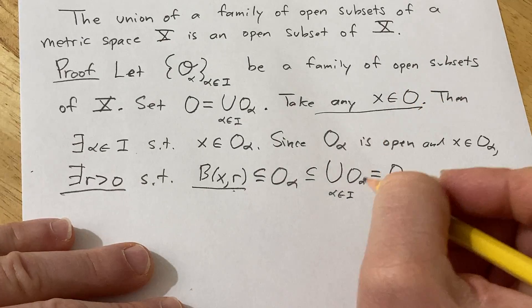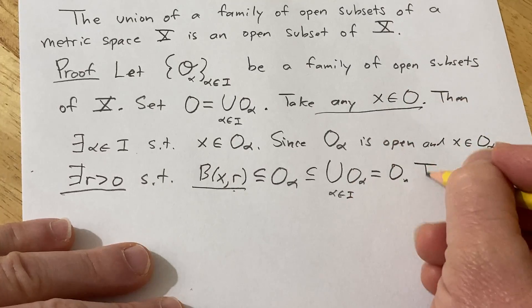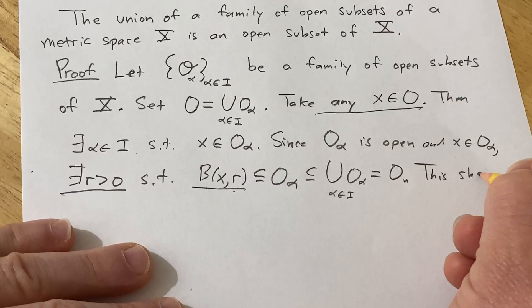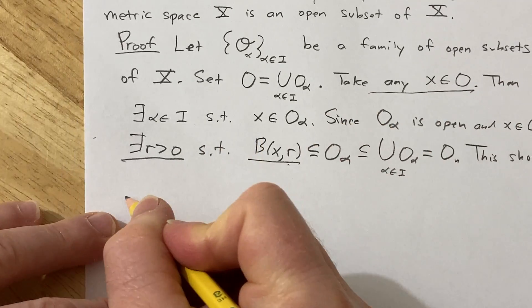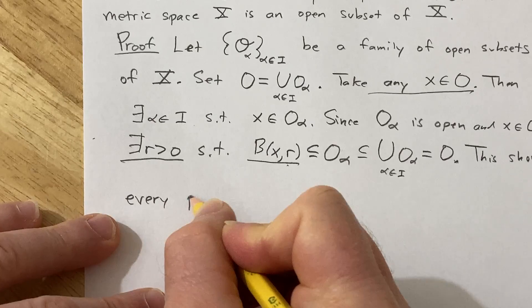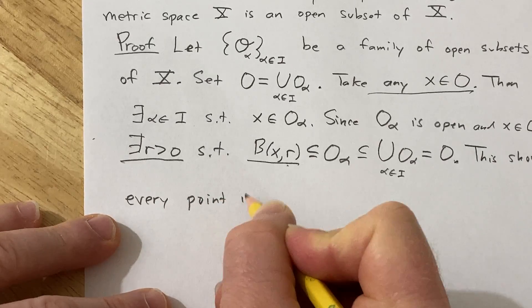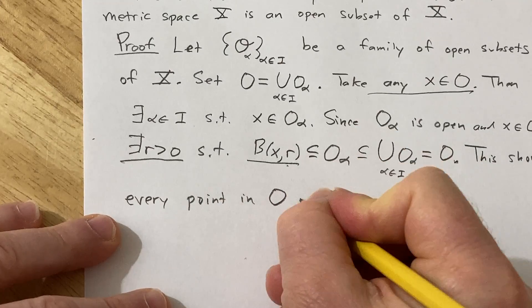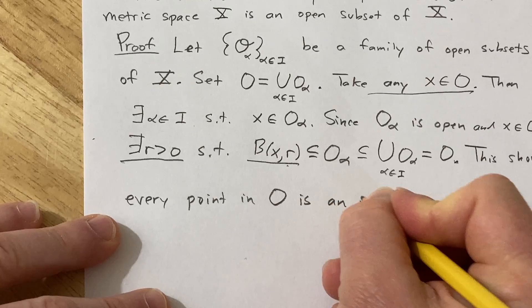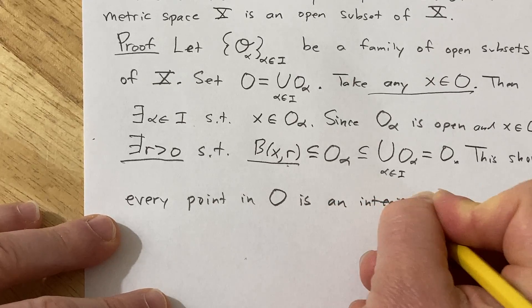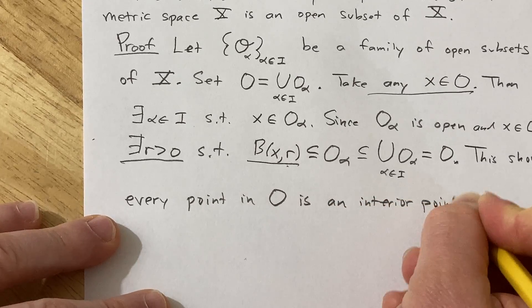Therefore, every x in O is an interior point. So this shows every point in O is an interior point of O.